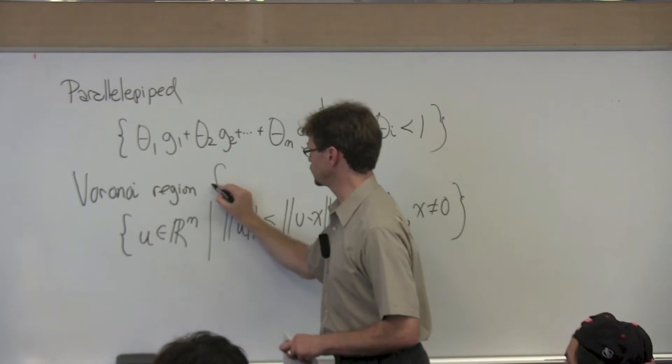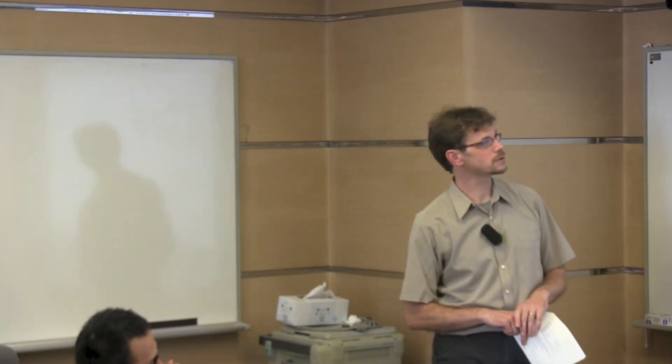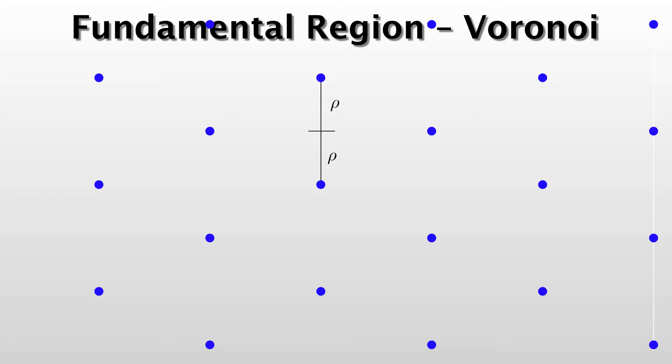So this is the Voronoi region for the point 0. I just want to look at this a little bit more carefully. Look at one lattice point and one of its neighbors and draw a line between them. Cut it in half.